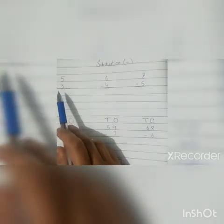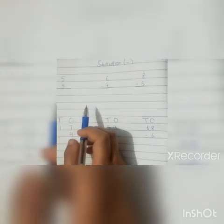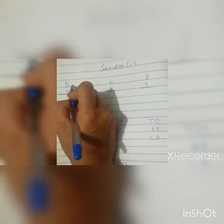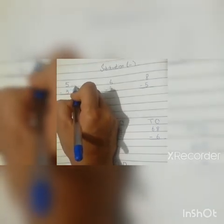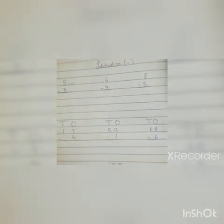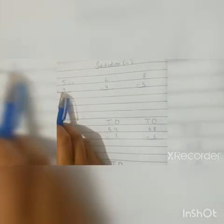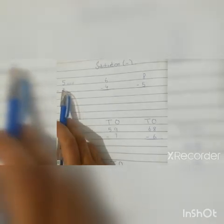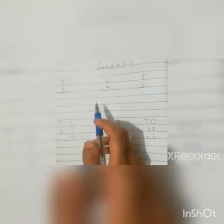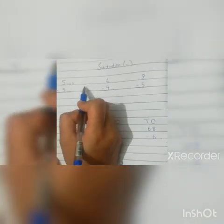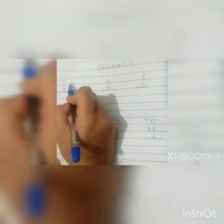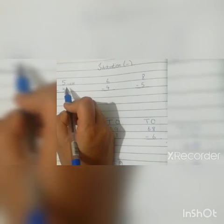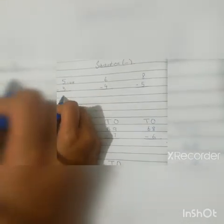We have the number five minus three. Just like in addition we draw lines — we draw five lines: one, two, three, four, five. Now there is a three — we don't draw three new lines, we are going to subtract three lines from the first. One, two, three — crossed off. How many lines are left? One, two — the answer is two.